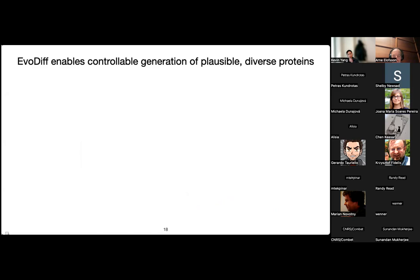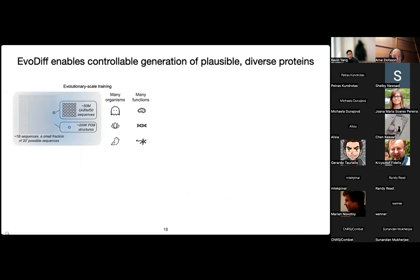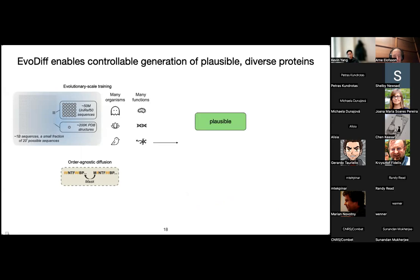Next we're going to show that EvoDiff enables controllable generation of proteins that are both plausible and diverse. The main claim is that by training on sequences from across evolution — for many organisms, many functions, and many tens of millions of sequences — using this order-agnostic diffusion framework, we want to show that we can generate sequences that are plausible or high quality, diverse from each other, and that cover the training distribution of natural proteins. We also want to show that we can do some conditional generation.